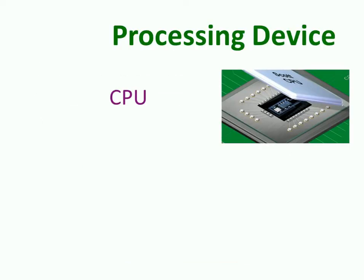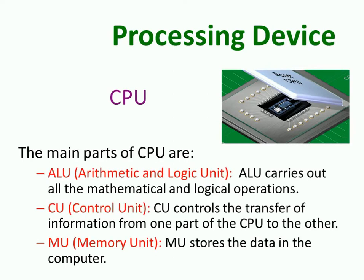Processing Device – CPU: CPU is called the brain of a computer. The main parts of the CPU are: ALU (Arithmetic and Logic Unit), which carries out all the mathematical and logical operations; CU (Control Unit), which controls the transfer of information from one part of the CPU to the other; and MU (Memory Unit), which stores the data in the computer.